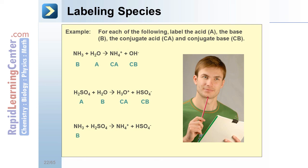In the final equation, ammonia is the base. It accepts a hydrogen to form the conjugate acid. H2SO4 is the acid which donates a hydrogen resulting in the conjugate base.